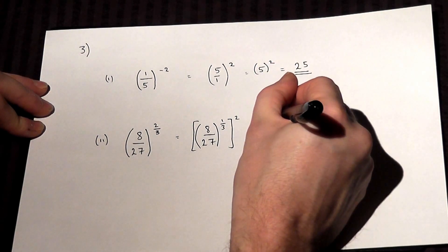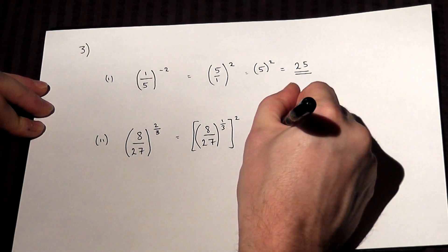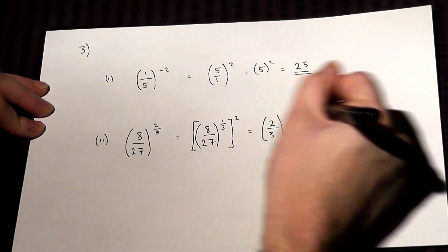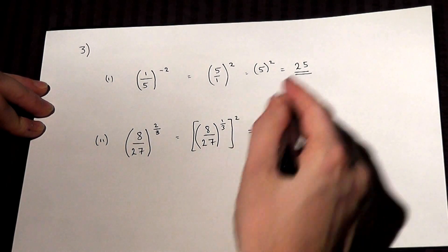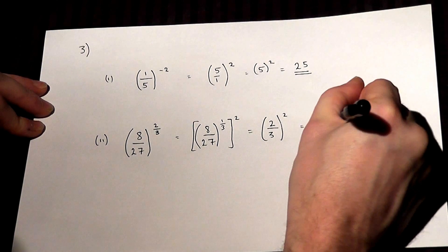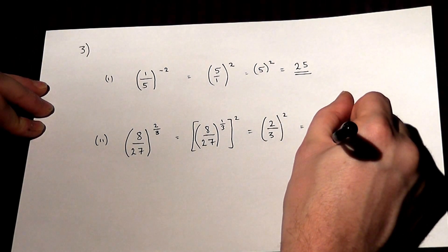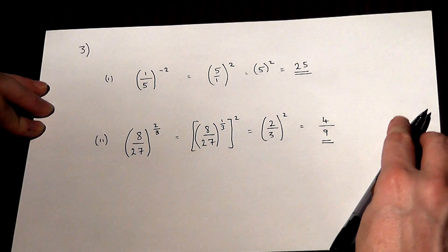The cube root of 8 is 2, and the cube root of 27 is 3. So this equals (2/3) squared, and 2 squared equals 4, and 3 squared equals 9. The final answer is 4/9.